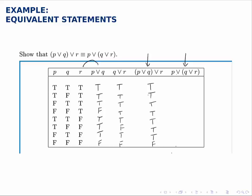For the last column, we'll combine Q or R which we built with P, so we'll combine this column and this one, again using the rule for OR. So it will be true, true, true, true, true, true and finally false. Because again, the only case where it's false is where both of them fail to be true, both of them are false.